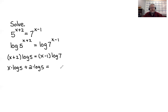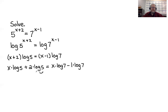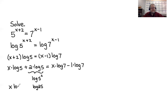Distributing on the right gives x times log 7 minus log 7. Now I apply the power property to the term 2 times log 5: the 2 powers up to give log of 5 squared, and 5 squared is 25, so this becomes log of 25. We now have x times log 5 plus log 25 equals x times log 7 minus log 7.